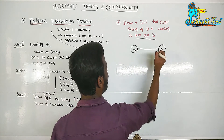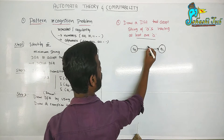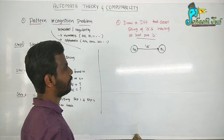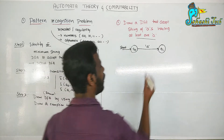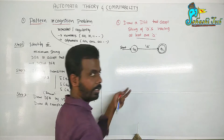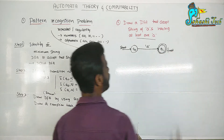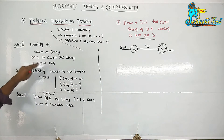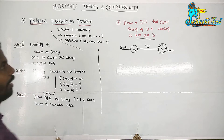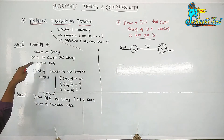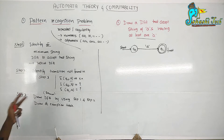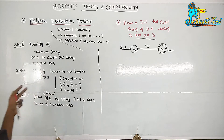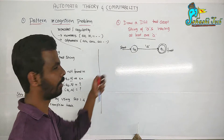The transition is: upon input A, control moves from Q0 to Q1. Q0 is the start state and Q1 is the final state. Step one is completed — we identified sigma and the minimum string A, and drew the initial DFA to accept it. Now let us go to step two: identify the transition not found in step one.